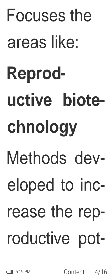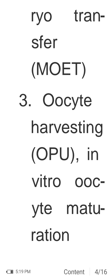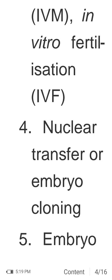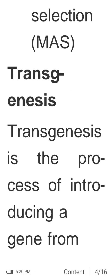Biotechnology for the genetic improvement of animals focuses on reproductive biotechnology. Methods developed to increase the reproductive potential of livestock include: artificial insemination, multiple ovulation and embryo transfer (MOET), oocyte harvesting (OPU), in vitro oocyte maturation (IVM), in vitro fertilization (IVF), nuclear transfer or embryo cloning, embryo transfer, gamete and embryo cryopreservation, marker-assisted selection (MAS), and transgenesis.